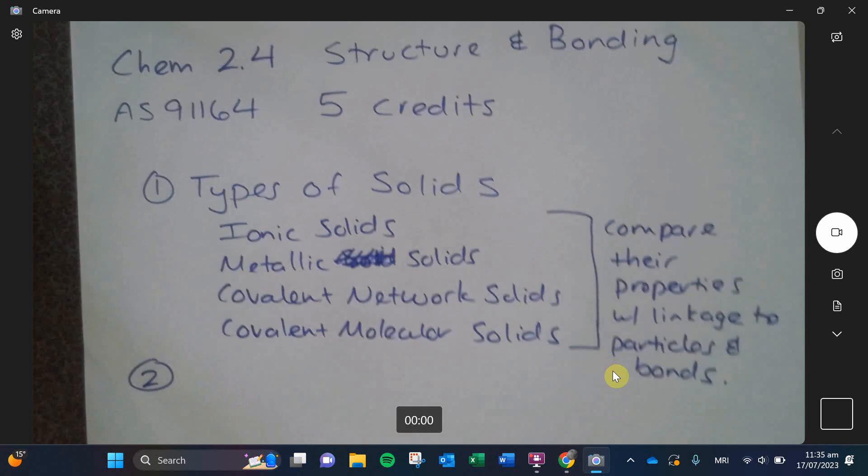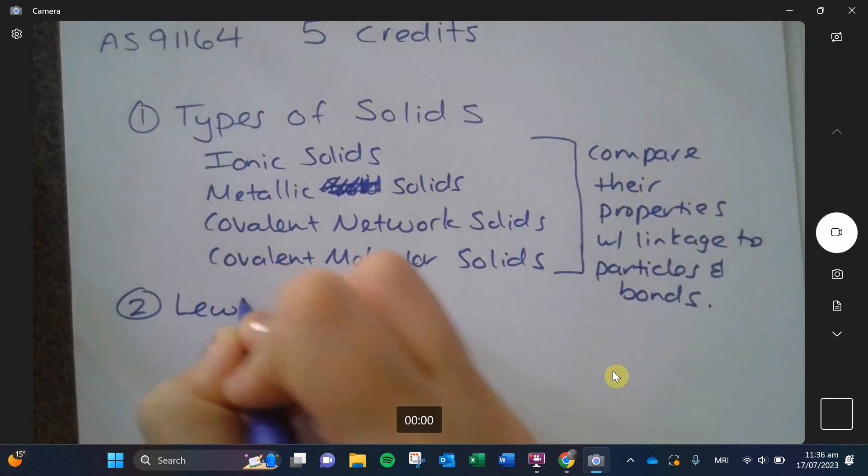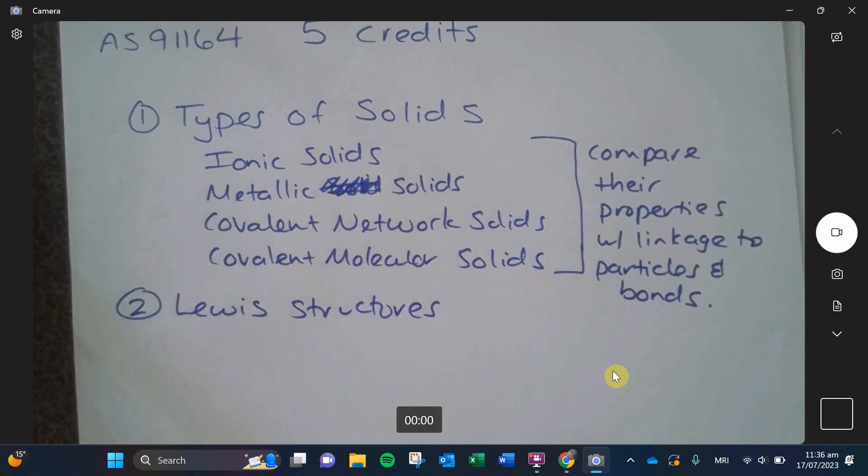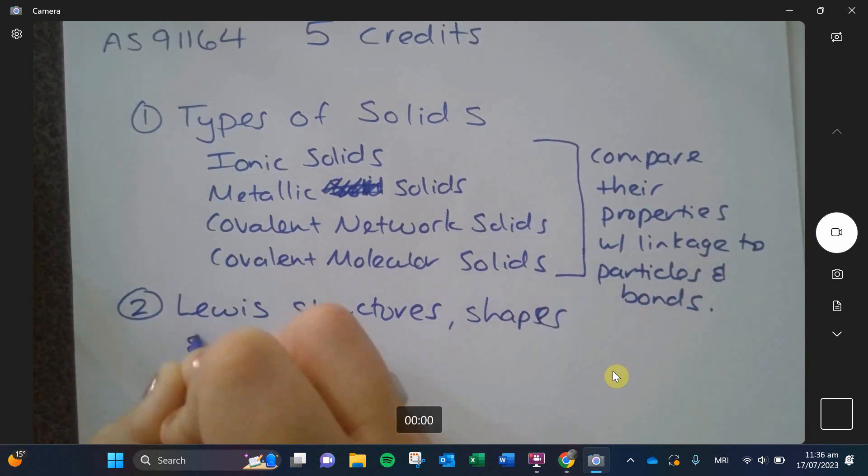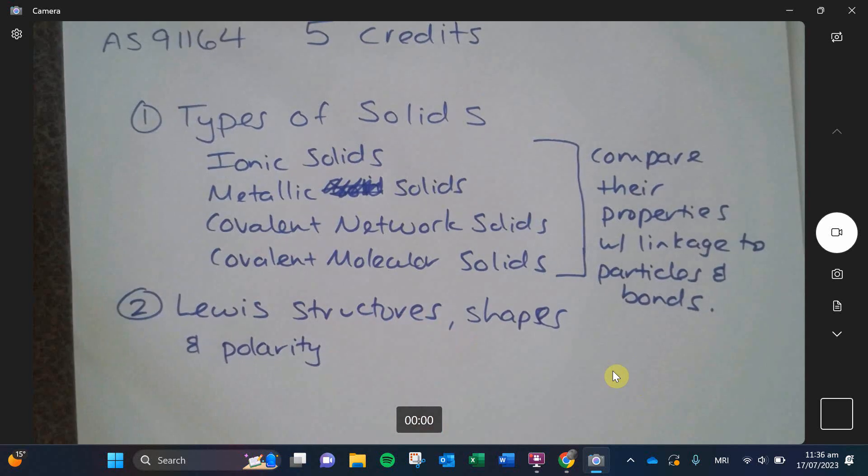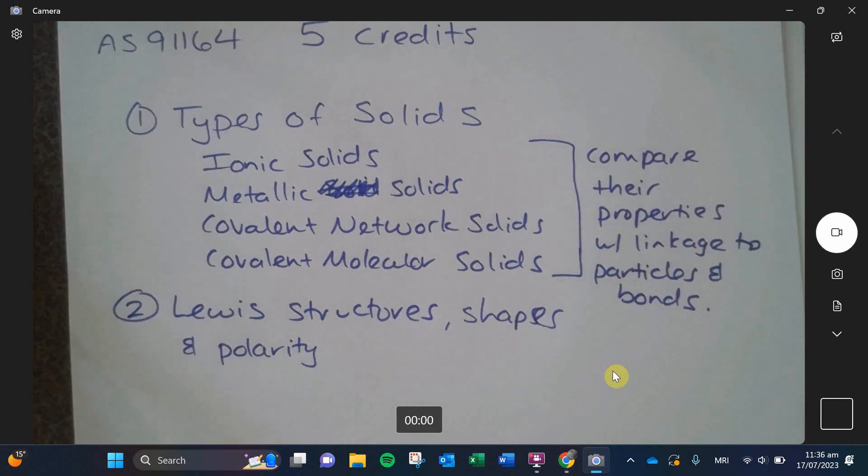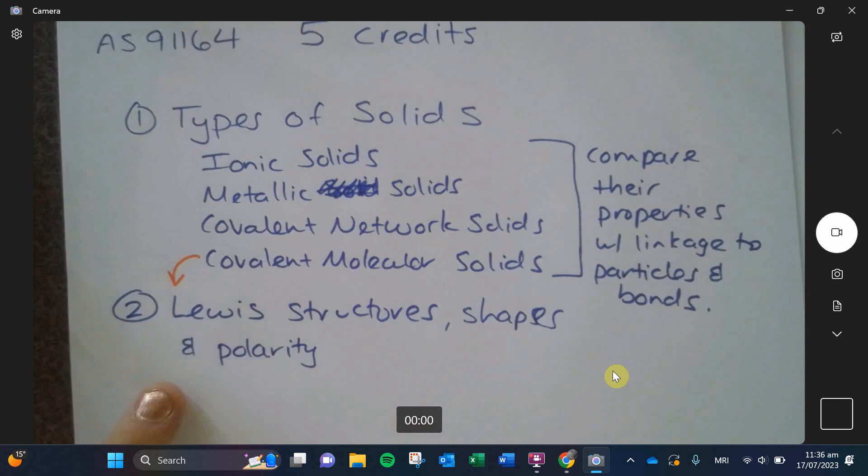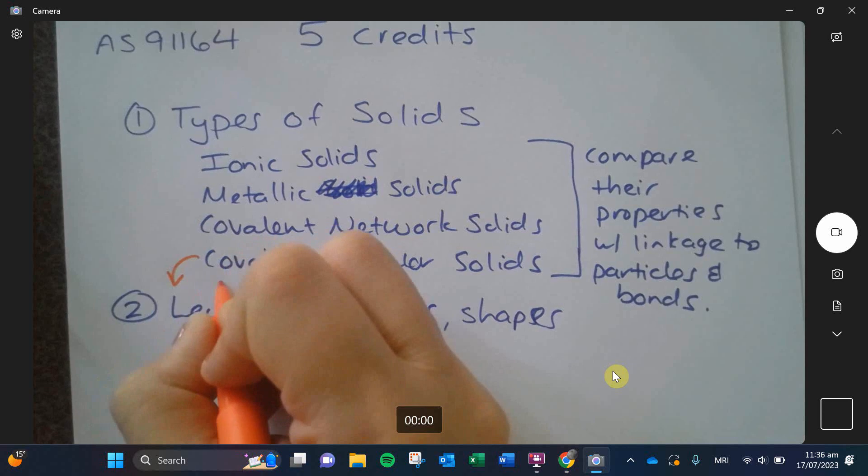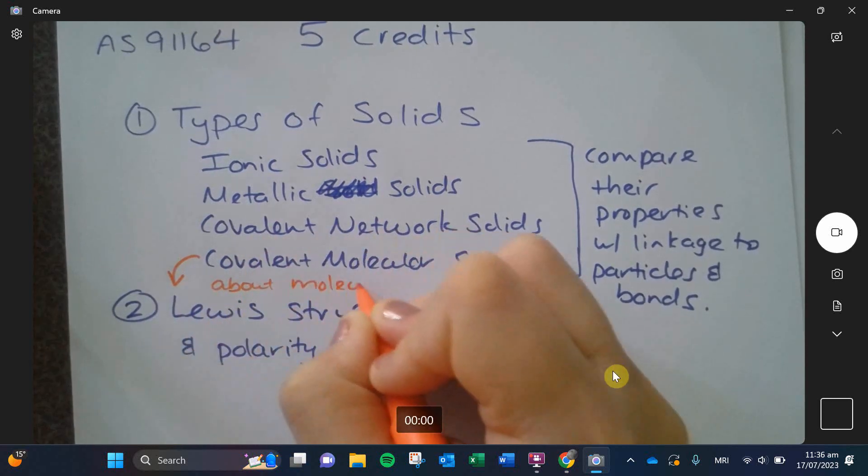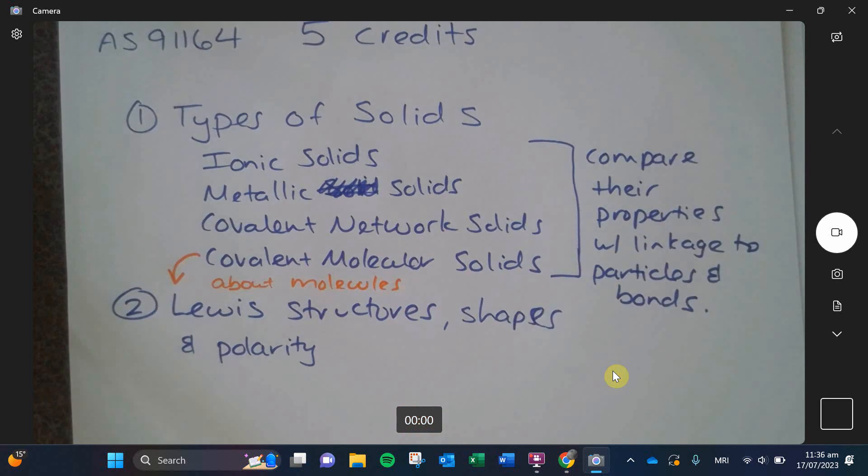The second type of question that you're going to get is going to be on Lewis structures, which I've heard you guys have already done. Shapes and polarity. I'm guessing you guys haven't done shapes or polarity yet. This Lewis structure question is actually tied into one of your types of solids. It's just going into more depth. So these covalent molecular ones, that is what's tying into your Lewis structures and your shapes and your polarity, because this question here is all about molecules.